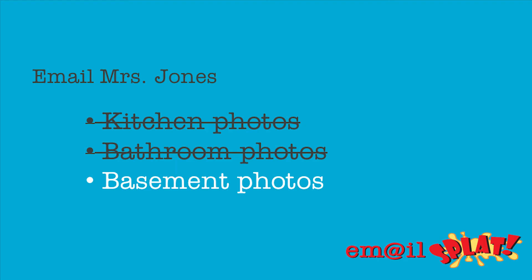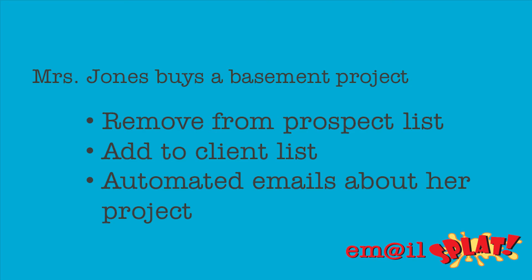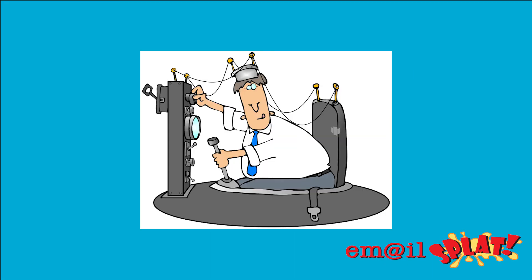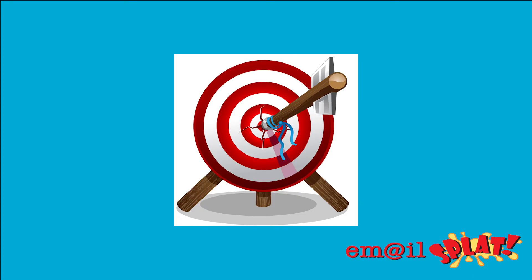No more boring emails. Once Mrs. Jones buys a basement remodel from me, I can take her off my prospect list and add her to my client list. From there I can send her automatic emails about what to expect during her project, who her project manager will be, and how to reach someone if there is an emergency — all automatically. From the time Mrs. Jones becomes a prospect until I finish her project, I will always be one step ahead of her. She will think I am reading her mind, all because I am targeting my communication to her specifically. Yet it is scalable, so I could be doing the same thing for 158 other clients all at the same time.